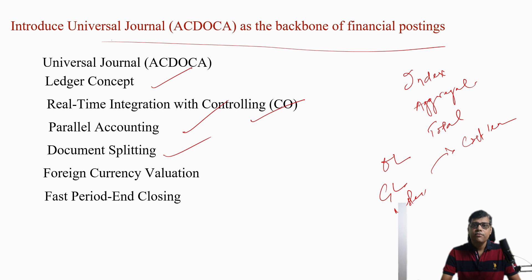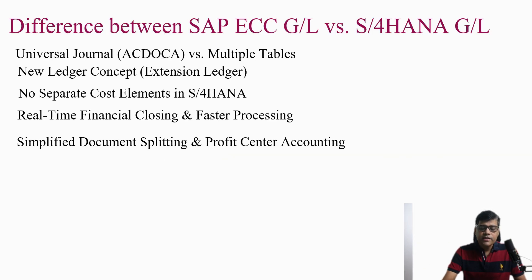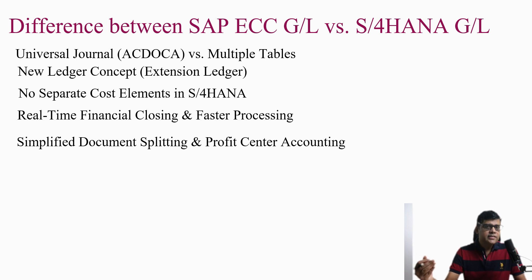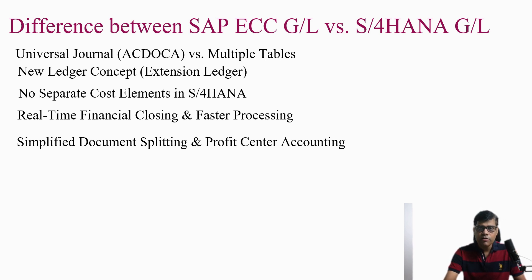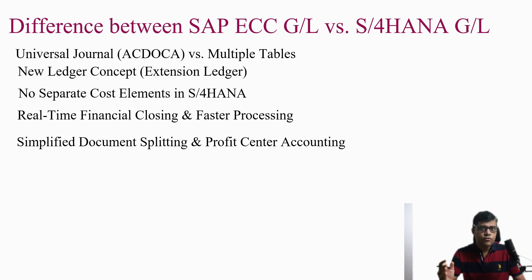Now coming to the differences between ECC and S4 HANA. In ECC, multiple tables existed — different tables for customer, supplier, asset, index tables, aggregate tables — all of those are eliminated. Now we have only one table: the ACDOCA table. ACDOCA replaces multiple tables not only related to finance but also controlling and secondary cost element-related tables. Everything is part of ACDOCA.